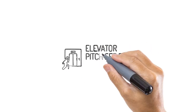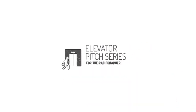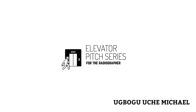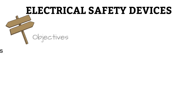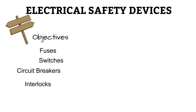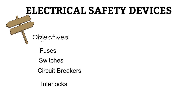Hello, and welcome to Elevator Pitch Series for the Radiographer. I am Michael, and this is the fifth video in the series on radiographic equipment. In this video, we'll be looking at electrical safety devices — the functions and components of a fuse, how switches operate, circuit breakers, and the types of interlocks.